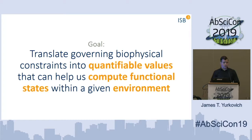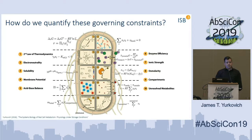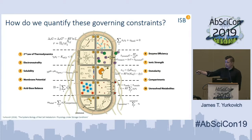Most of what I'm going to talk about today is a theoretical framework we've put together that allows us to model these constraints. We've assembled ten different classes of constraints — eight are truly biophysical constraints, and a couple address technological issues with integrating this kind of data into such a framework. One key feature is that we've formulated all of these constraints with only a single free variable: x, the metabolite concentration.